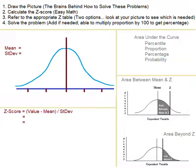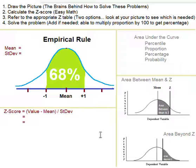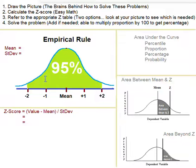We are going to explore four types of problems that all come under the heading of area under the curve. The normal distribution is our curve, and this is the area under it. According to the empirical rule, 68% of the population is within plus and minus one standard deviation of the mean, and 95% of the population is within plus two and minus two of the mean.